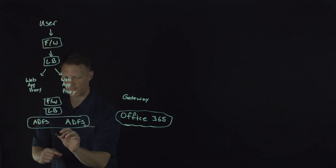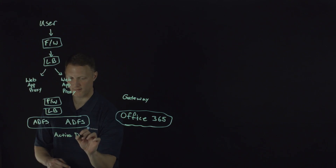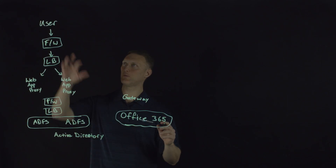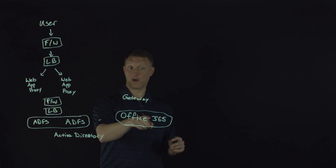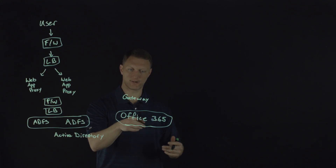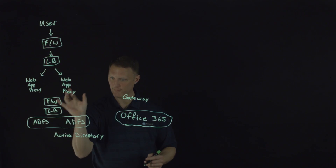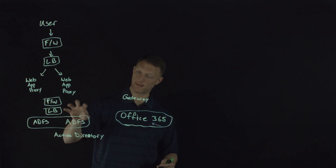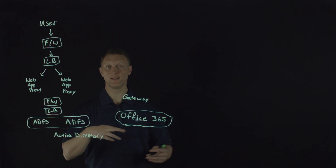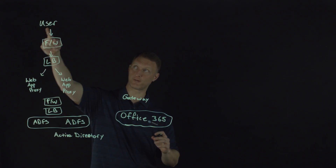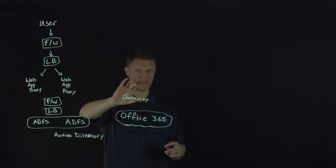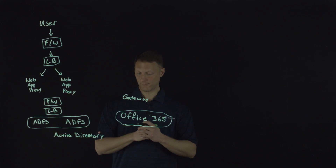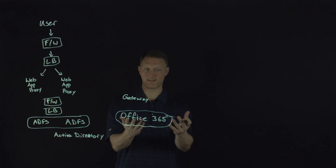And then from the ADFS farm you're going to have your actual Active Directory. So basically what happens: the user comes in, goes through all this stuff, and ultimately he's trying to get to Office 365. The user is going to authenticate to the Active Directory Federation Services farm, and the ADFS servers are going to authenticate that user to Active Directory. That's when he gets the token and the cookie and the things he needs to then present to the gateway, and the gateway says okay, based on the cookie and the token you gave me, I'm going to give you access to your Office 365 web service. And so everybody's happy.